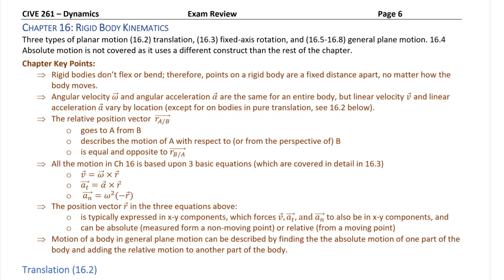To start with the big picture, the overall chapter 16: rigid bodies don't flex, they don't bend — they are going to basically maintain an equal distance between points on that body, no matter how the body moves. So a rigid body doesn't flex, doesn't bend, doesn't stretch, so points on the body are going to be an equal distance apart no matter how it moves through space: translation, rotation, or general plane motion.